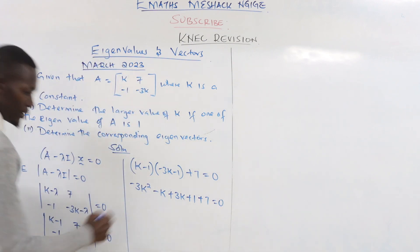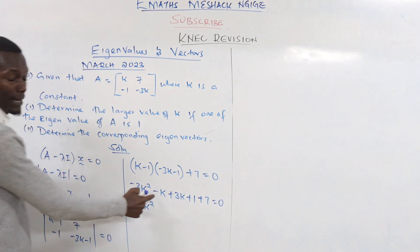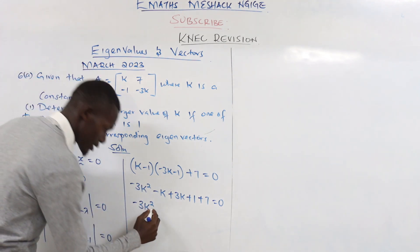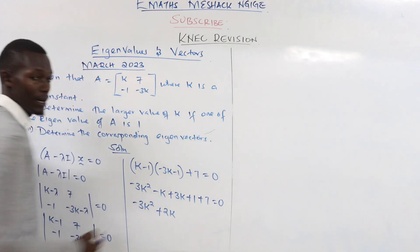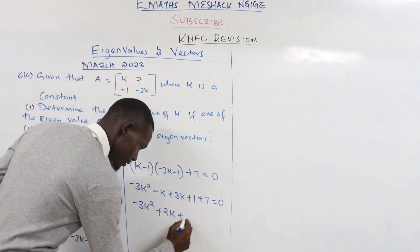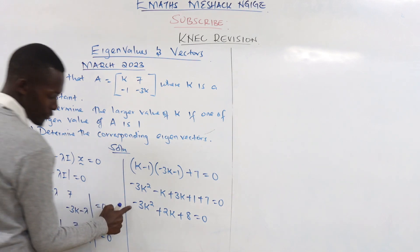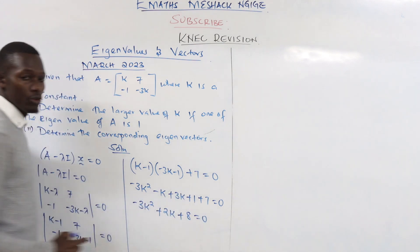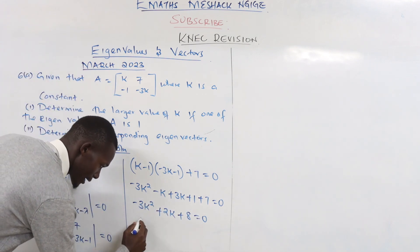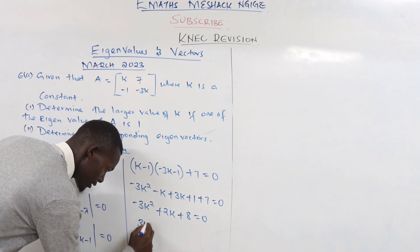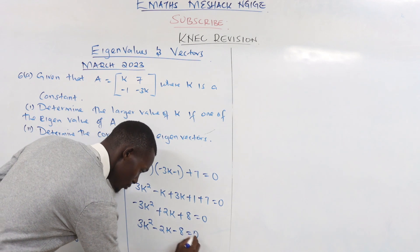Continuing to expand: negative 1 times negative 3k gives positive 3k, and negative 1 times negative 1 gives positive 1. Adding the seven from the off-diagonal: negative 3k squared, then negative k plus 3k gives plus 2k, then 1 plus 7 gives 8, all equals zero. Multiplying through by negative one gives: 3k squared minus 2k minus 8 equals zero.